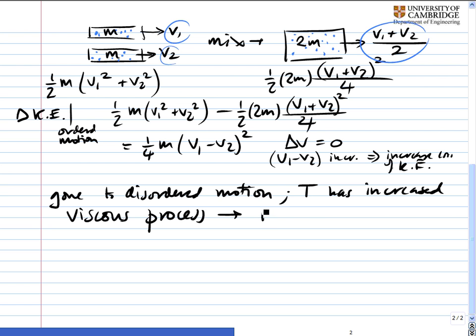This has led to an increase in disorder, or more specifically, the energy of the disordered motion, and an increase in temperature. Now, a physicist would say that because the degree of disorder has increased, you've got an increase in entropy, and therefore it's irreversible.